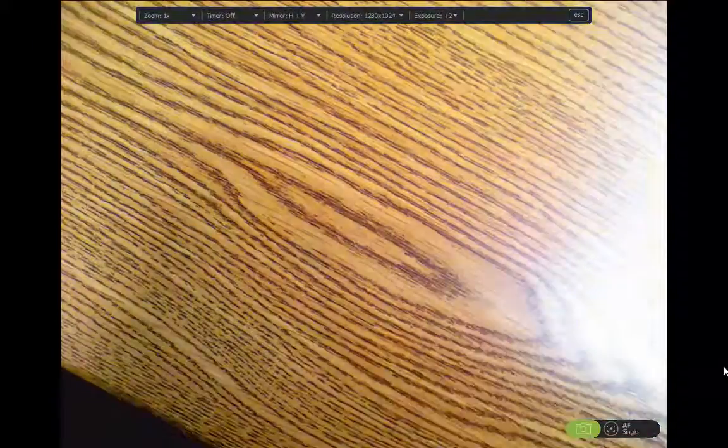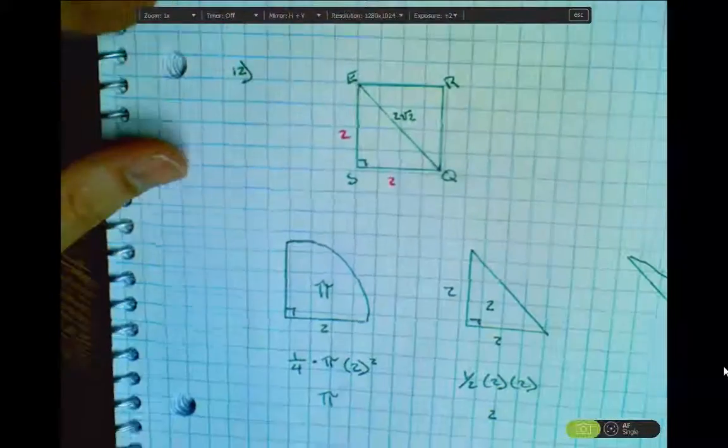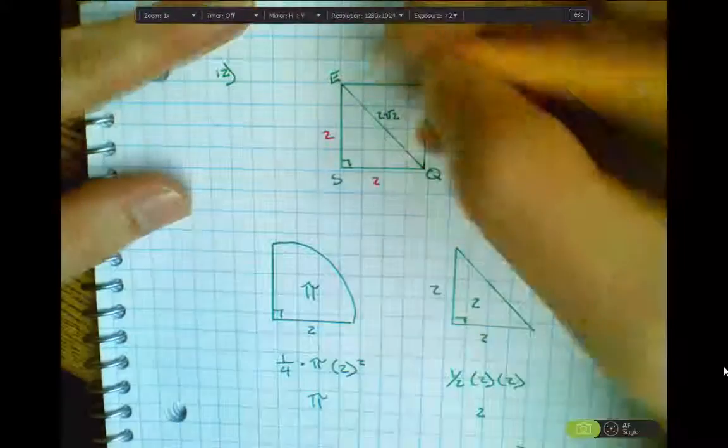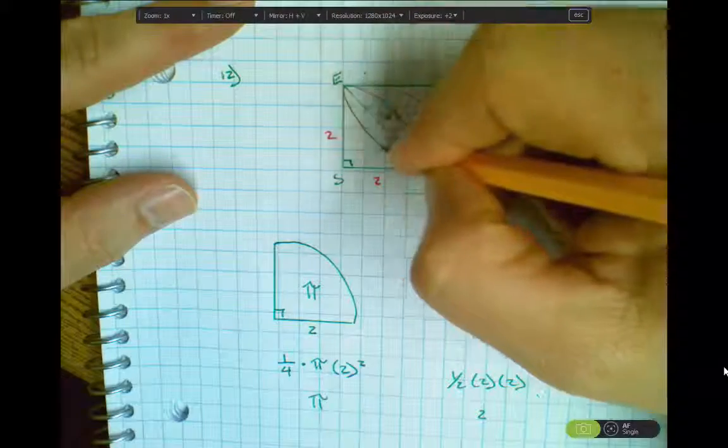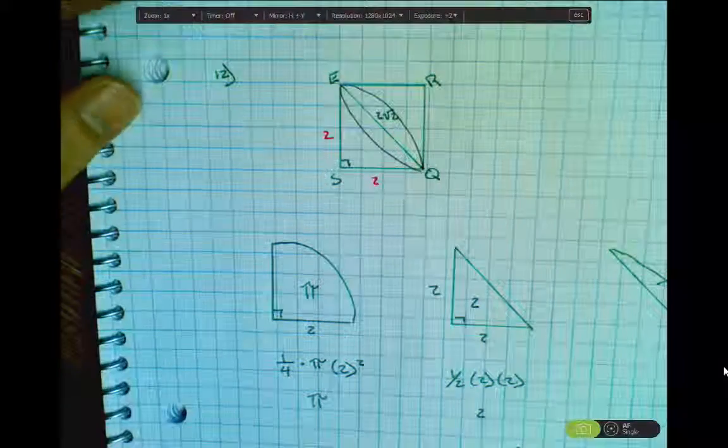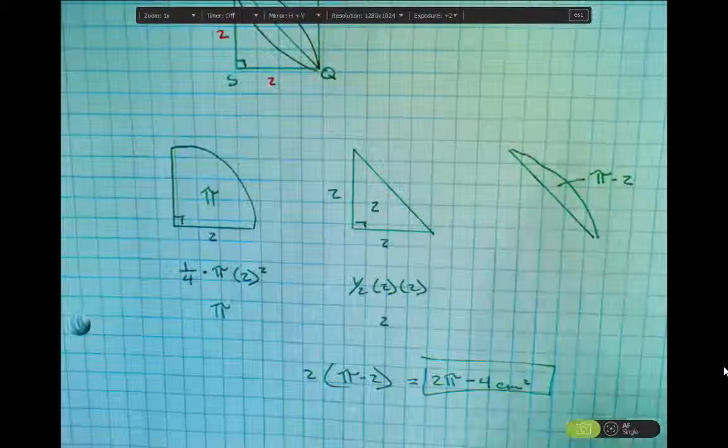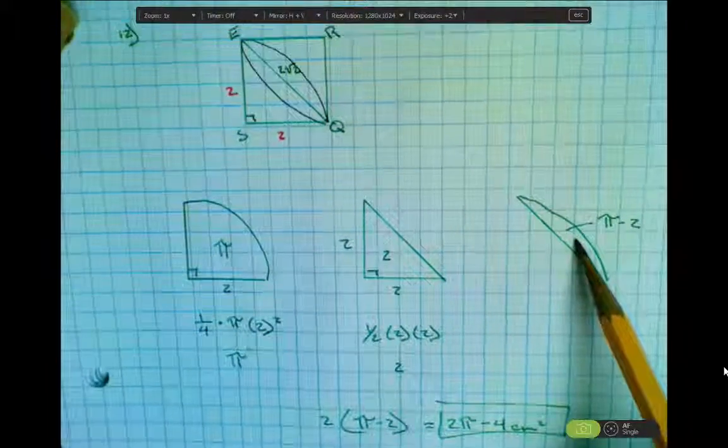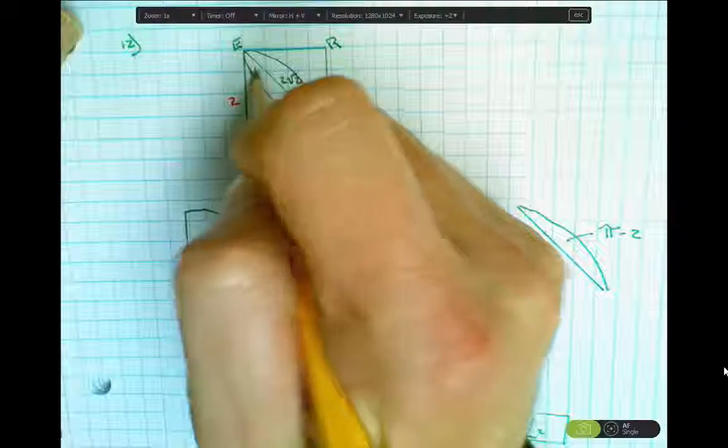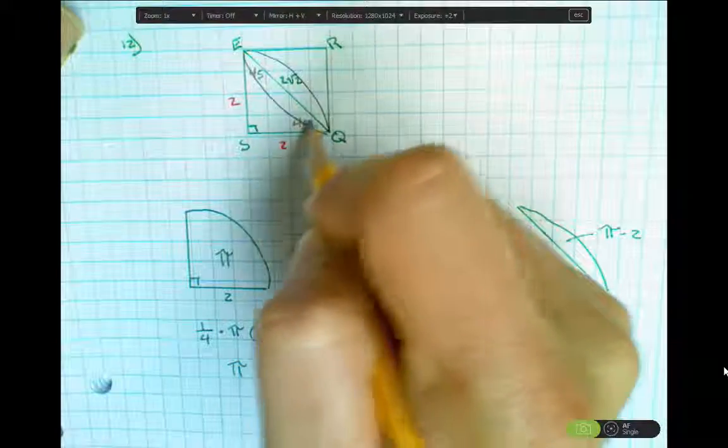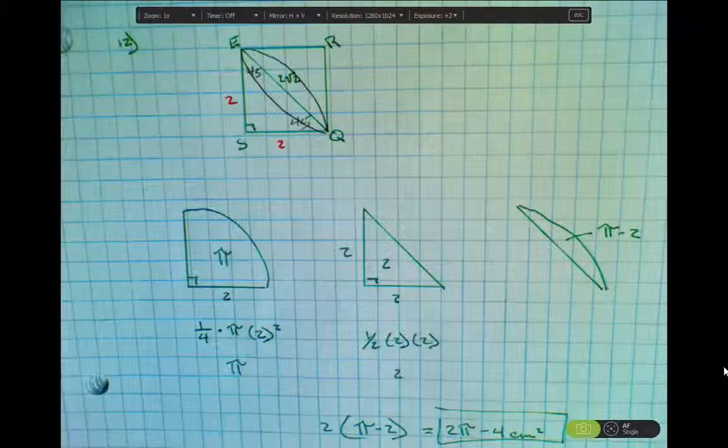Question number 12. So they give us a picture, and they're asking for the shaded region of this segment here combined with this segment here. And so what we're going to do is we're going to find one segment at a time. So to get this segment here, what do I know? I know the diagonal has a length of 2 root 2. Again, this is a 45, 45, 90. If I divide by root 2, each side of the square has a length of 2.